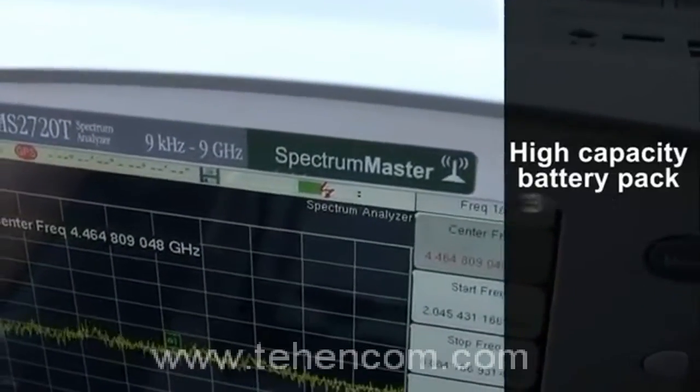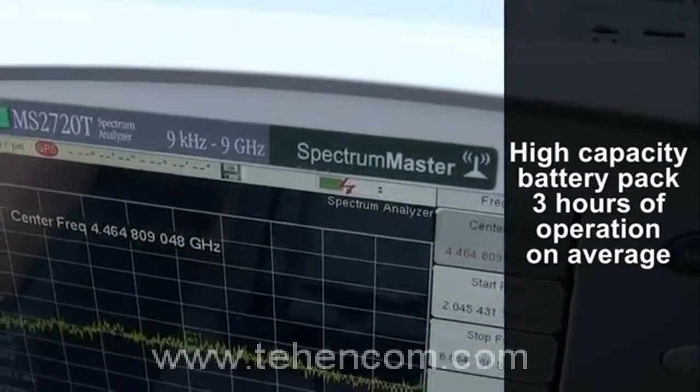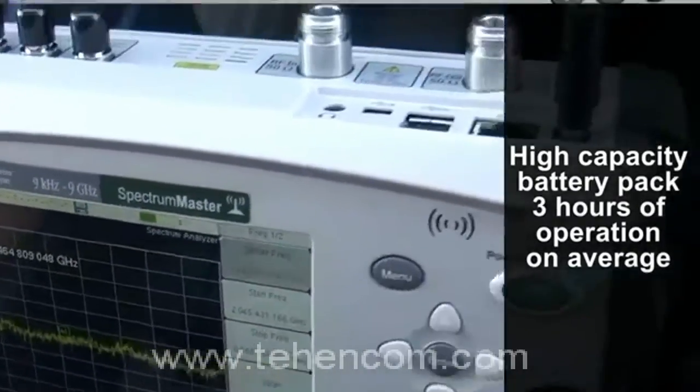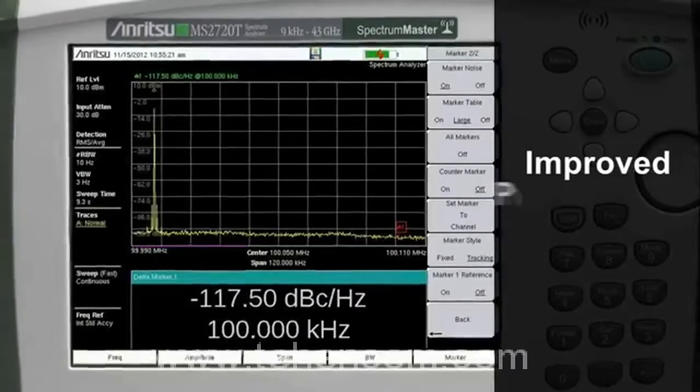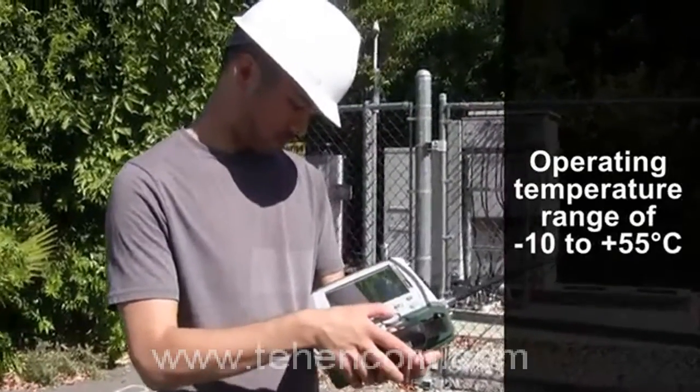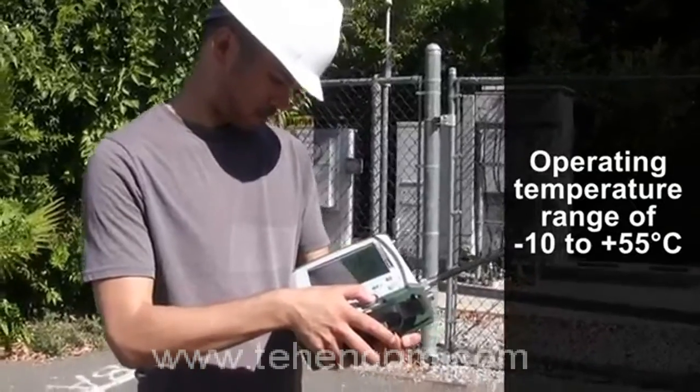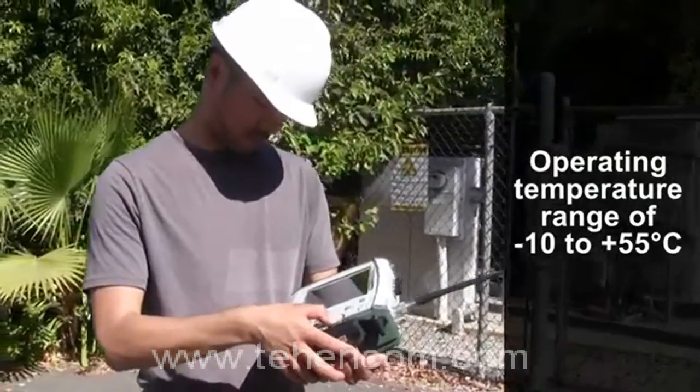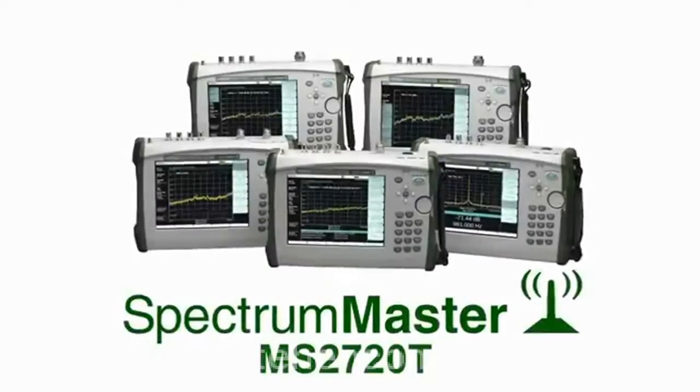A higher capacity battery pack that delivers 3 hours of operation on average. Improved phase noise, now down to minus 112 dBc per hertz. And a specified operating temperature range of minus 10 to plus 55 degrees Celsius using batteries.